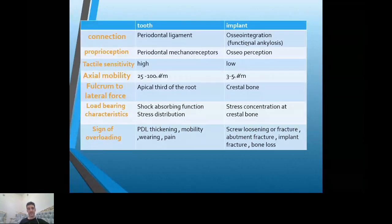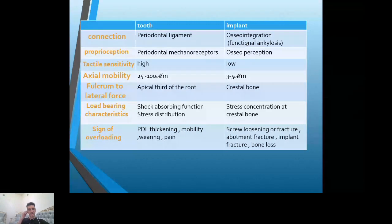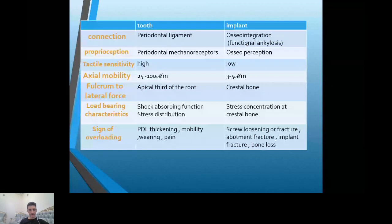The fulcrum of lateral force in the tooth is at the apical third of the root, while in the implant it is at the crestal bone. Regarding load-bearing characteristics, the tooth has shock absorber function and stress distribution due to the periodontal ligament, while in the implant we have no stress distribution.